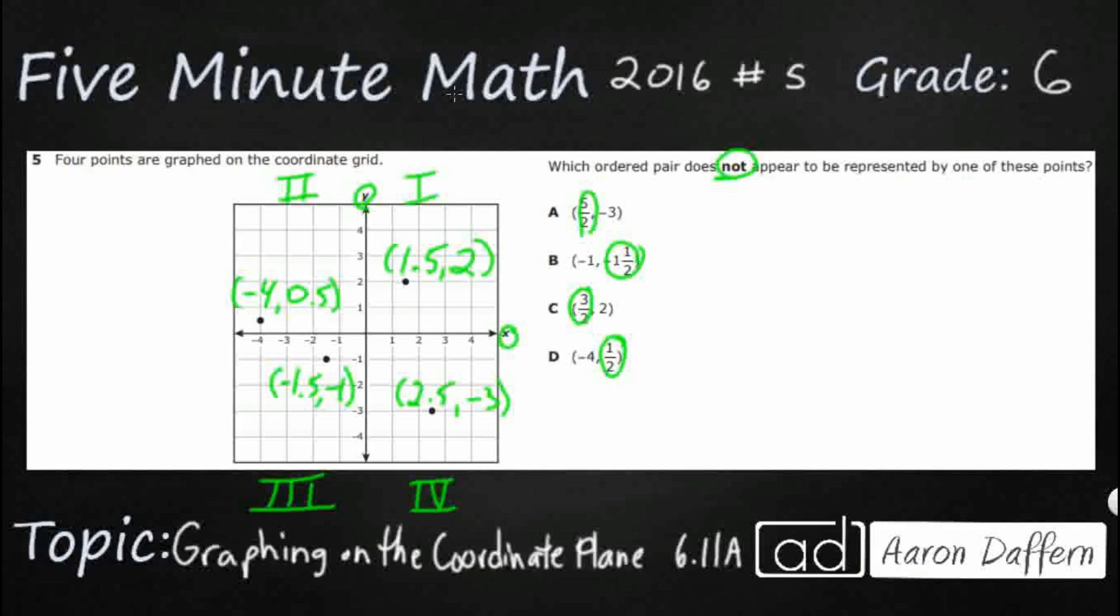So five over two, 5/2. So if we want to change that into a decimal, we just divide, right? So two goes into five. That's going to be twice. Decimal, decimal, bring that zero down. So that's going to be five. So 2.5.